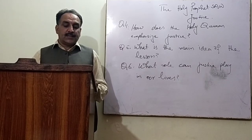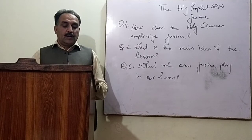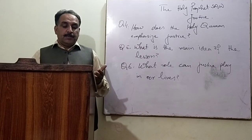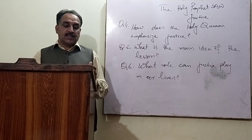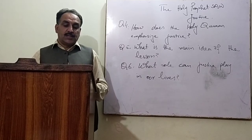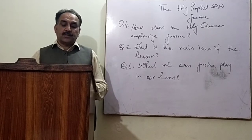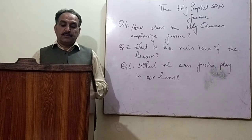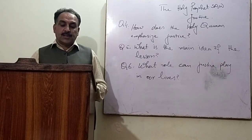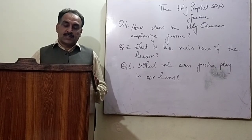Underline the silent letters in the following words. Climb — B is silent in this word. Bridge — D is silent in this word. Edge — D is silent. Calm — B is silent. Subtle — B is silent. Debt — B is silent. Doubt — B is silent.